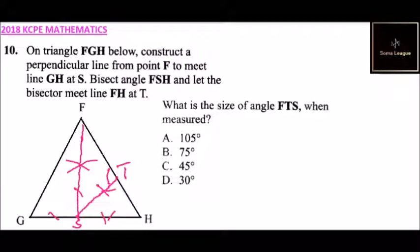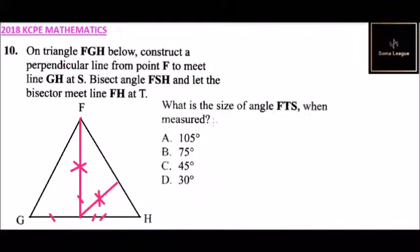This is how it should look like. You bisect, you drop a perpendicular here. This is where you have your S and this is where you have T. You also bisect angle FSH.